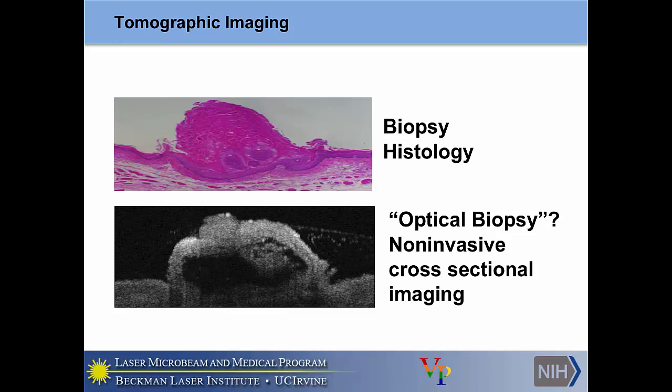One of the attractive opportunities that optical imaging allows is the capability to perform cross-sectional imaging, also known as tomographic imaging. On top, you can see an H&E stained biopsy in which a tissue sample is taken, thinly sliced, stained, and then investigated under standard light microscopy. Ideally, you would have an imaging modality that could provide cross-sectional imaging with high resolution, allowing you to avoid biopsies — especially in sensitive tissue areas like the vocal cords where you don't want to remove tissue from the patient.